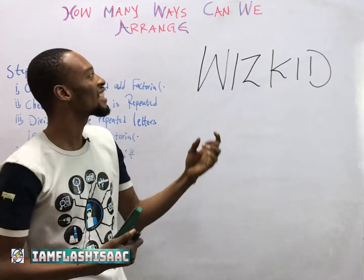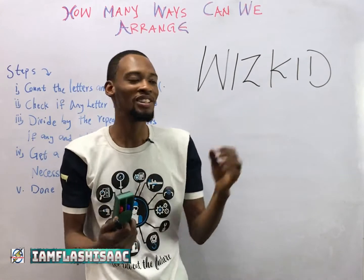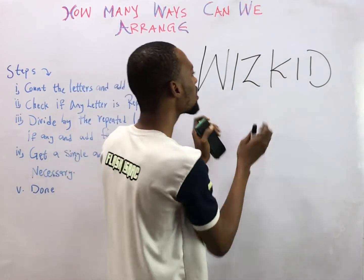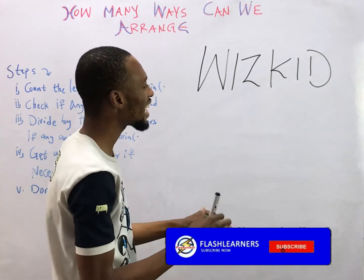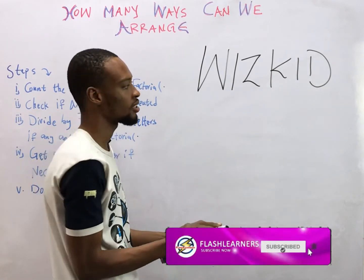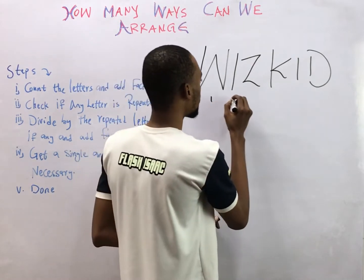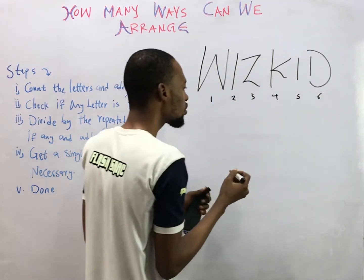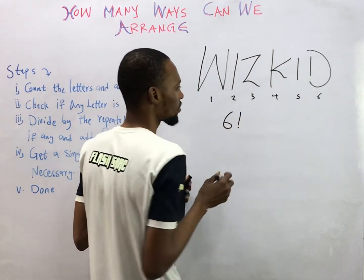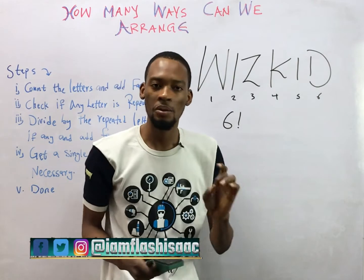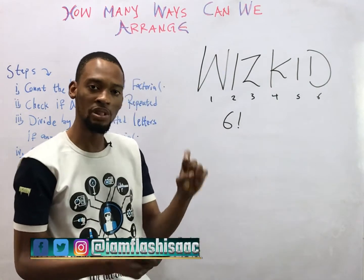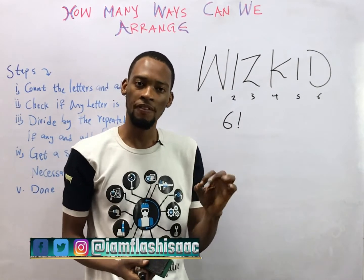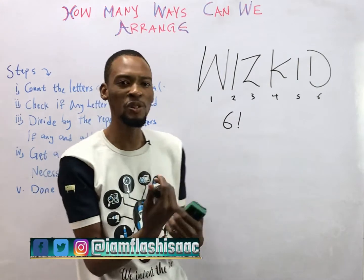In how many ways can the letters of the word WHISKEY be arranged? To arrange the letters in WHISKEY, the first thing we do is count the total letters in the word. The letters are one, two, three, four, five, six. So we put six factorial. Six factorial is six times five times four times three times two times one. A factorial is multiplying a number downward starting from the number itself.